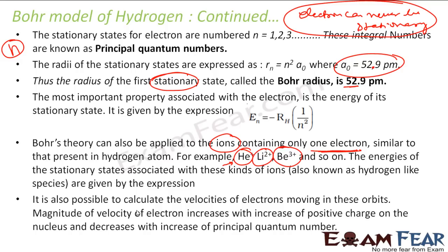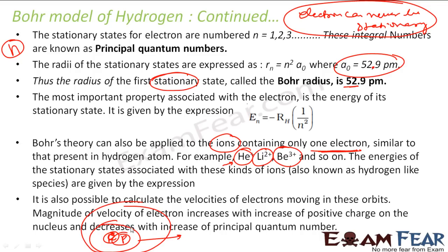It is also possible to calculate the velocities of electrons moving in these orbits. The magnitude of velocity increases with the increase in positive charge in the nucleus and decreases with an increase in principal quantum number. So if you have more protons, the velocity will be more. If you keep the proton count constant and go to higher orbits, the velocity will be less.